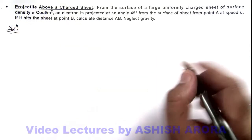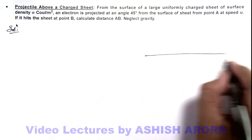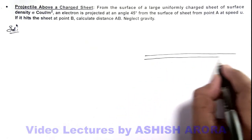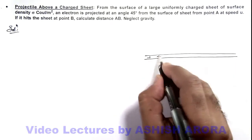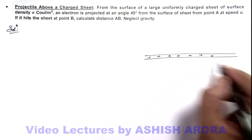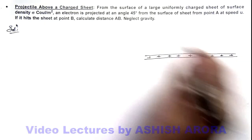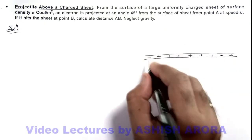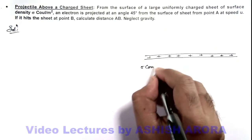So here if we consider the uniformly charged sheet to be horizontal, it won't make any difference whether I consider it horizontal or vertical, because we are required to neglect gravity. And say it is charged at sigma coulombs per meter squared.